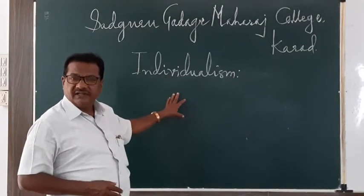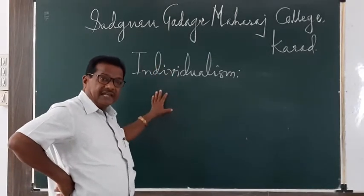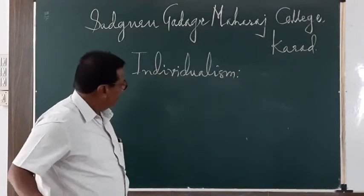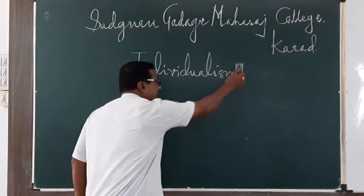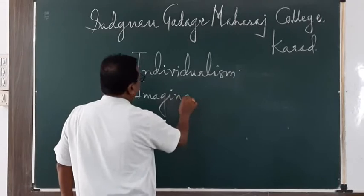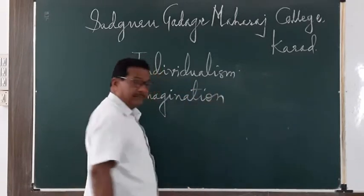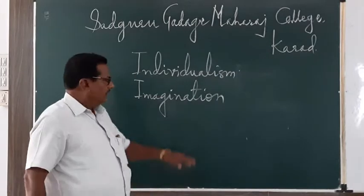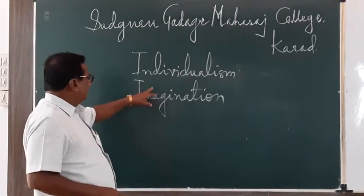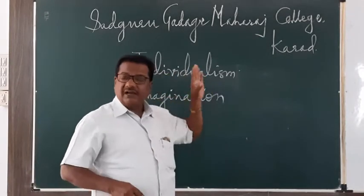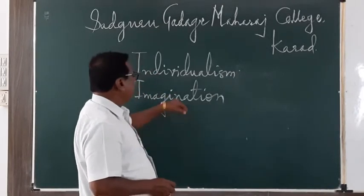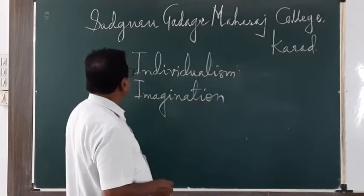Romantic poetry can better be understood in contrast with neoclassical poetry of the 18th century. The second important feature of romantic poetry is imagination — the free play of imagination. In neoclassical poetry there is no place for imagination, whereas romantic poetry of the early 19th century is full of imagination.